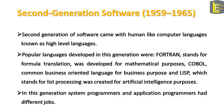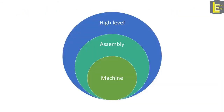In this generation, system programmers and application programmers had different jobs. This picture represents the concept of abstraction in computer science — that is, programmers working with high-level languages don't have to care about how assembly language or machine language in a device works.